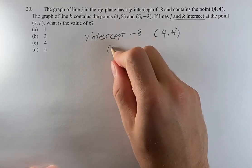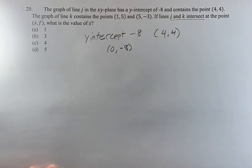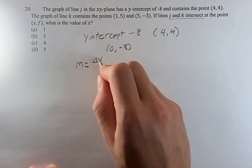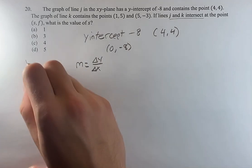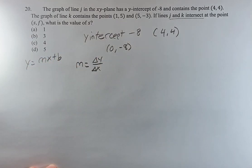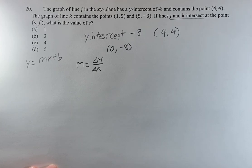So, y-intercept of negative 8 means that it goes to the point (0, -8). We know that it goes to (4, 4), so what we're going to be looking for here is the slope. We're trying to get into the form y = mx + b. I think that's just the easiest to work with in this situation. You could use other forms if you'd like.